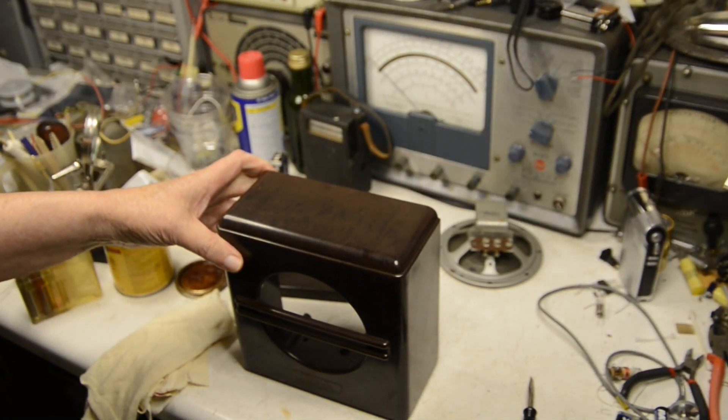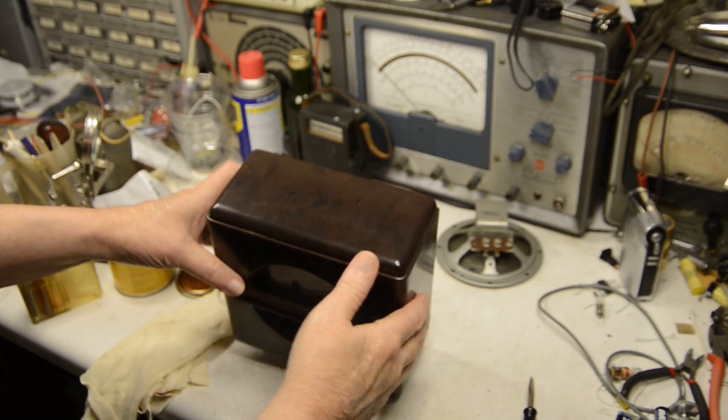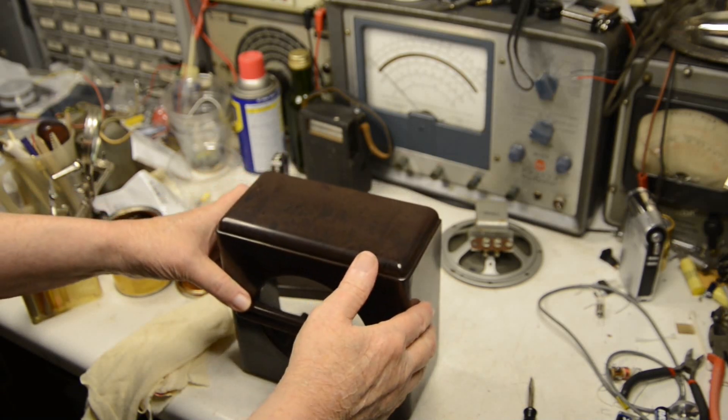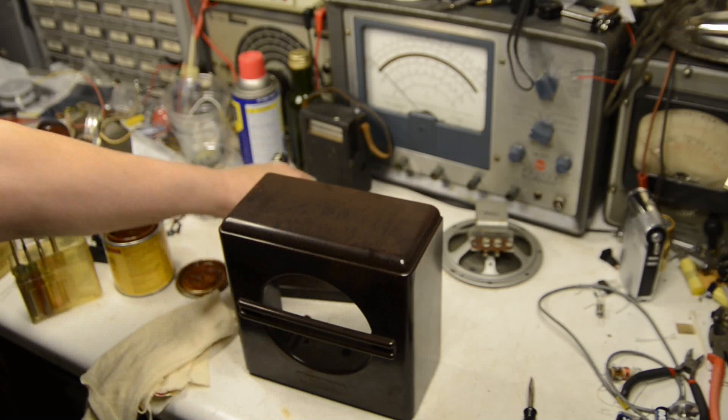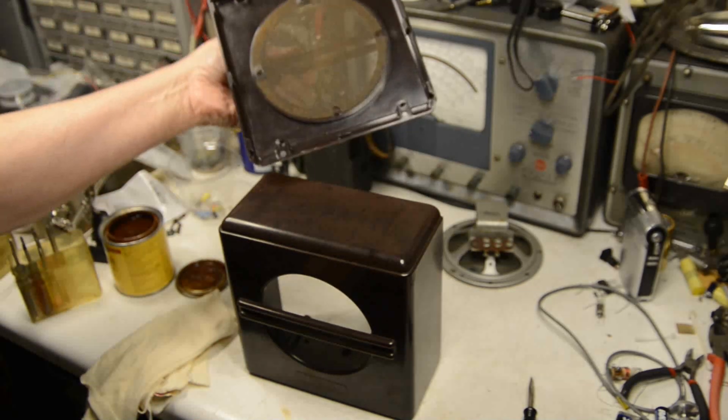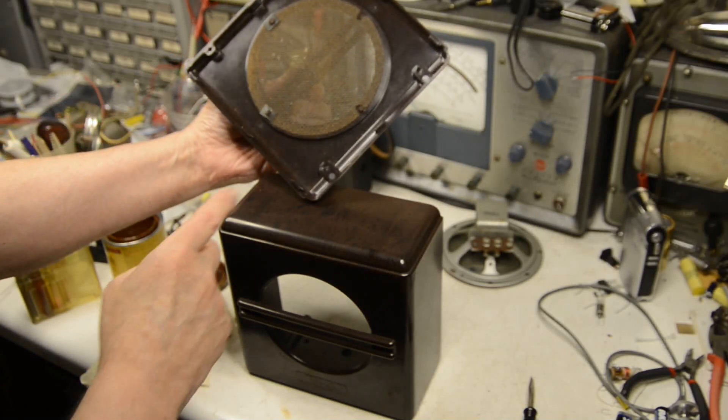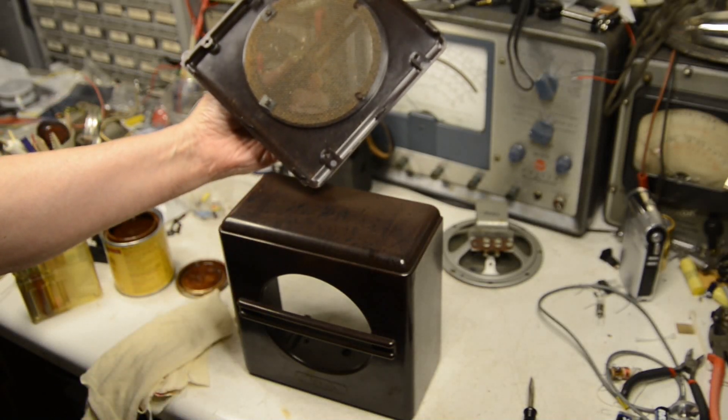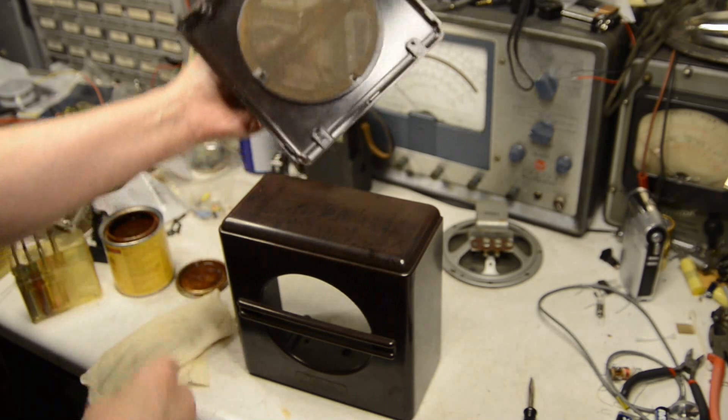Here's a Bakelite cabinet that I'm going to put a little stain on because it's faded a little bit. And here's the back. Let me turn this over and you can see that it should be a little darker and a little bit shinier.